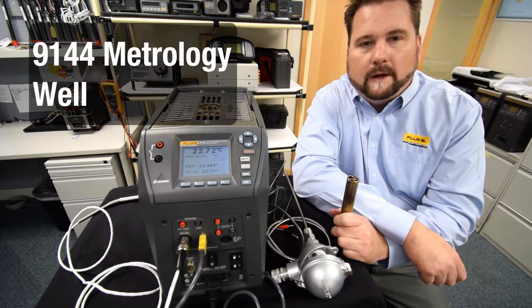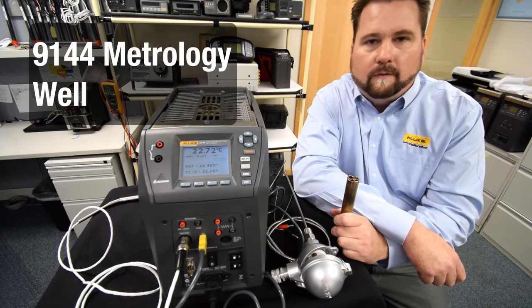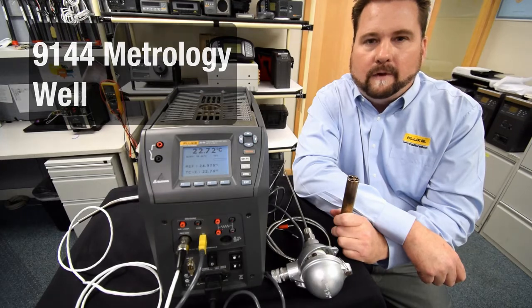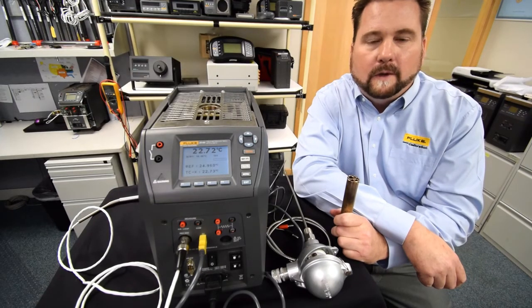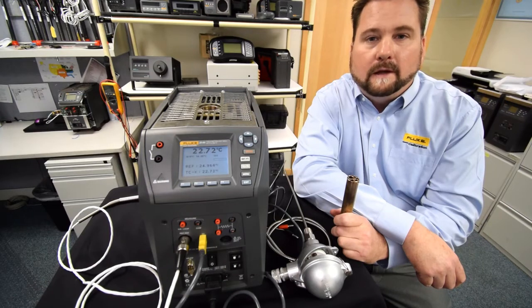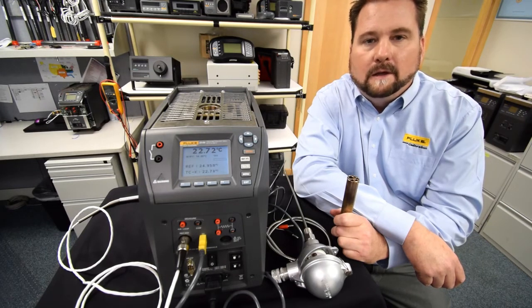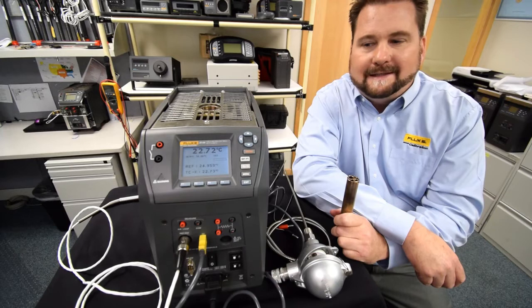Let me give you a quick rundown of our 9144 unit here that I have in front of me. But just to be clear, we've got three versions of our field wells that allow you to cover the temperature span of minus 25 to 660°C.